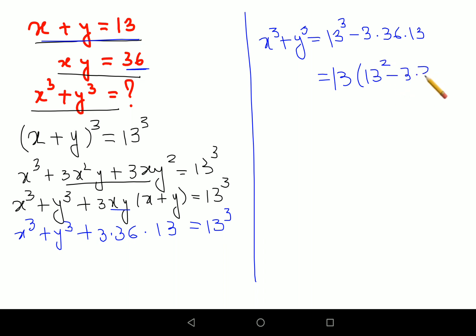So here what will be left is, taking 13 outside, then we are left with 13 square minus 3 into 36. So I'll keep the 13 as it is and 13 square is 169 and 3 into 36 is 108.